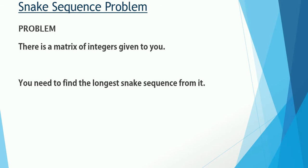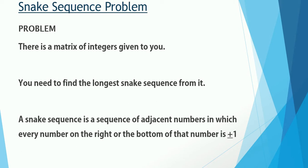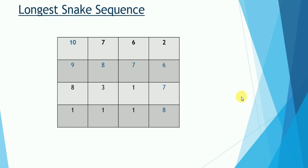You need to find the longest snake sequence from this matrix. A snake sequence is a sequence of adjacent integers in which every integer on the right or the bottom of that particular integer is either plus one or minus one. So the numbers have to be adjacent, and each number located such that the number on the right or just beneath it is either plus one or minus one of that particular number.